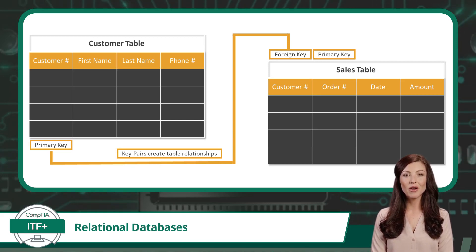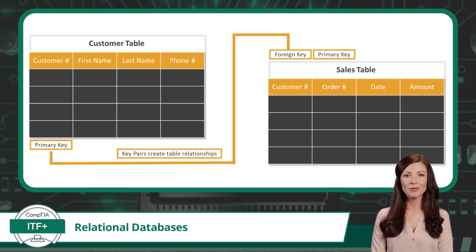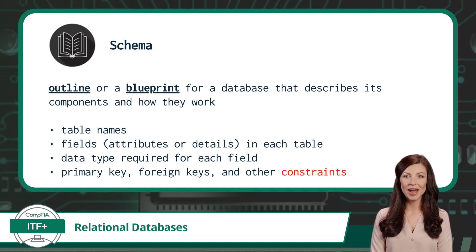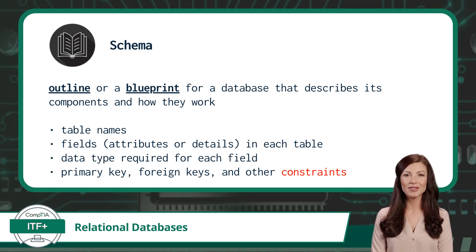In a nutshell, a primary key is a unique ID for each customer in our customer table, and the foreign key is used in the sales table to link each sale to a specific customer. You now know how a relational database works at a fundamental level. Next, we will look at the overall blueprint for a relational database, referred to as the schema. A database schema is an outline or blueprint that describes its components and how they work, including table names, fields in each table, the required data type for each field, and the primary keys, foreign keys, and any other data constraints.